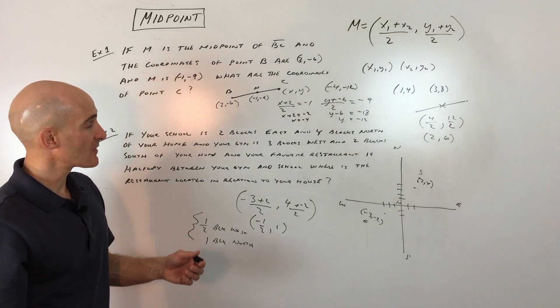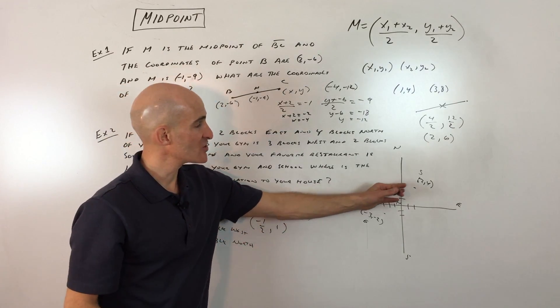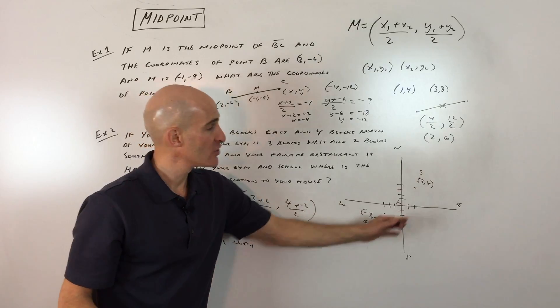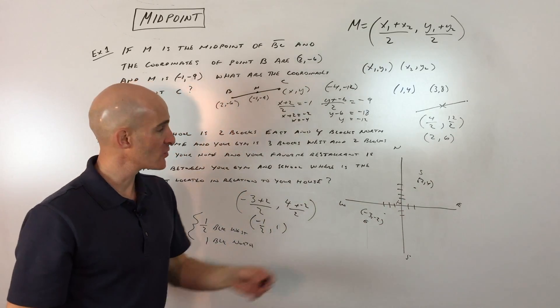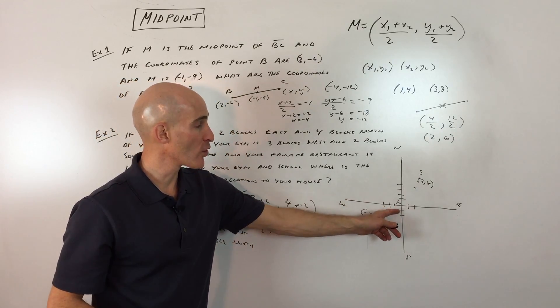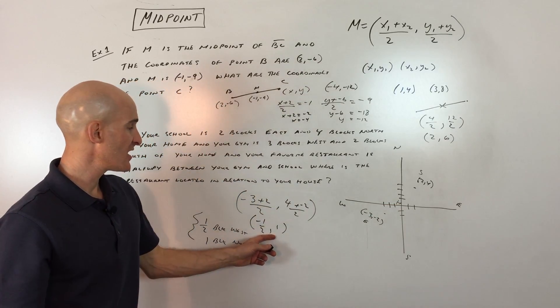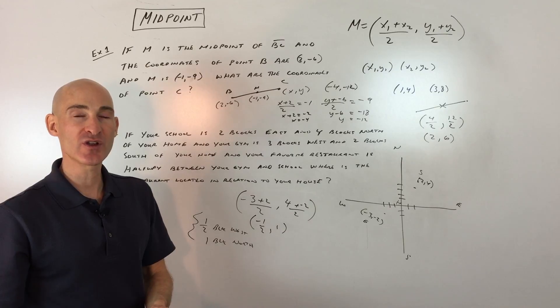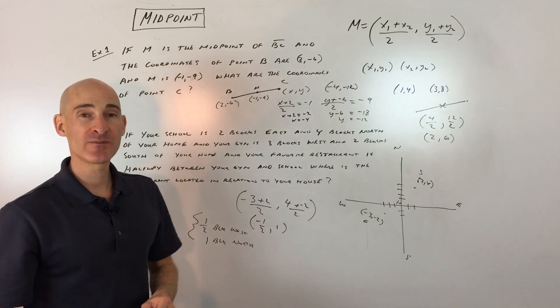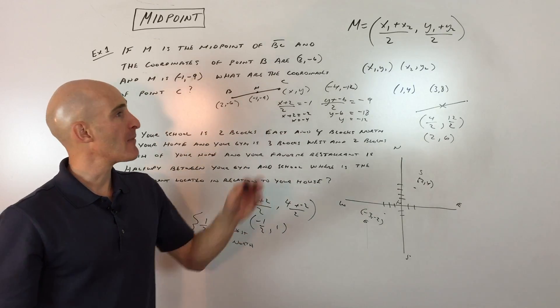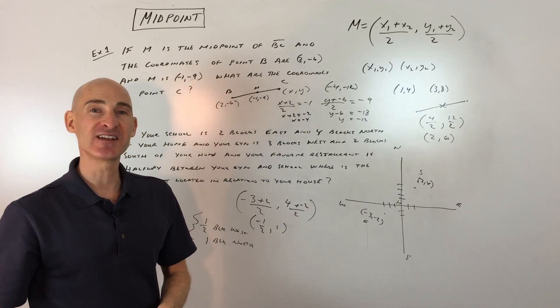The only tricky thing about this problem is that you just had to coordinate the points, draw this northeast-southwest axis so that you could locate where those were in relation to your home, and you placed your home at the origin. But after you got it coordinated as such, using the midpoint formula was pretty straightforward. Midpoint's definitely something you want to know for the ACT. Memorize that formula, and I'll see you in the next lesson.